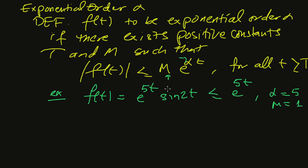T can be any positive number, so we can say this function is of exponential order alpha equal five. More examples will show how to determine this using limits — looking at f of t on top and e to the alpha t on the bottom, possibly using L'Hôpital's rule to see whether you get zero or infinity and figure out the order from there.